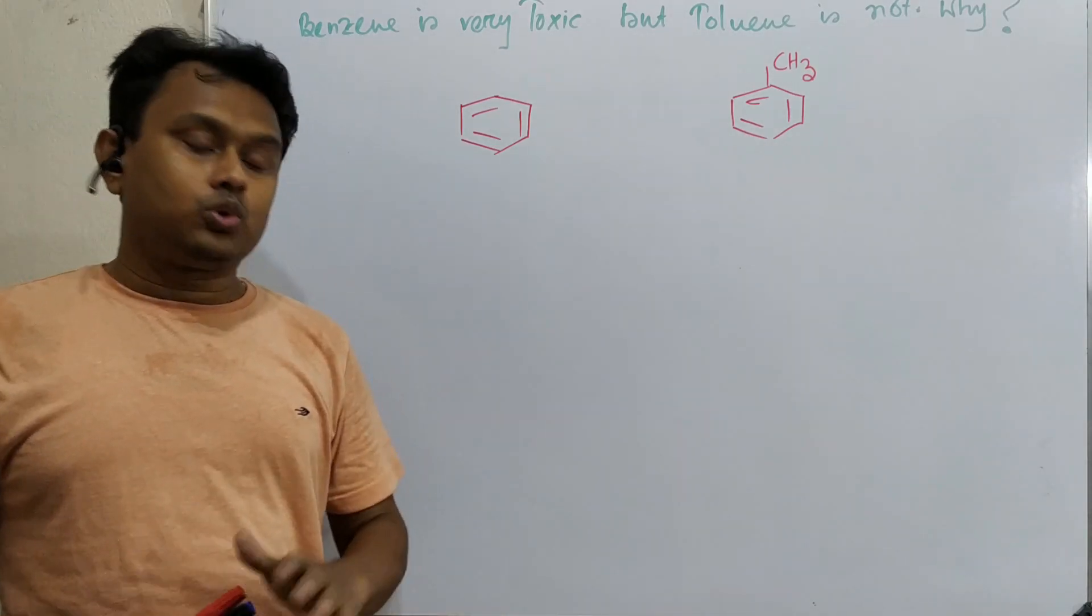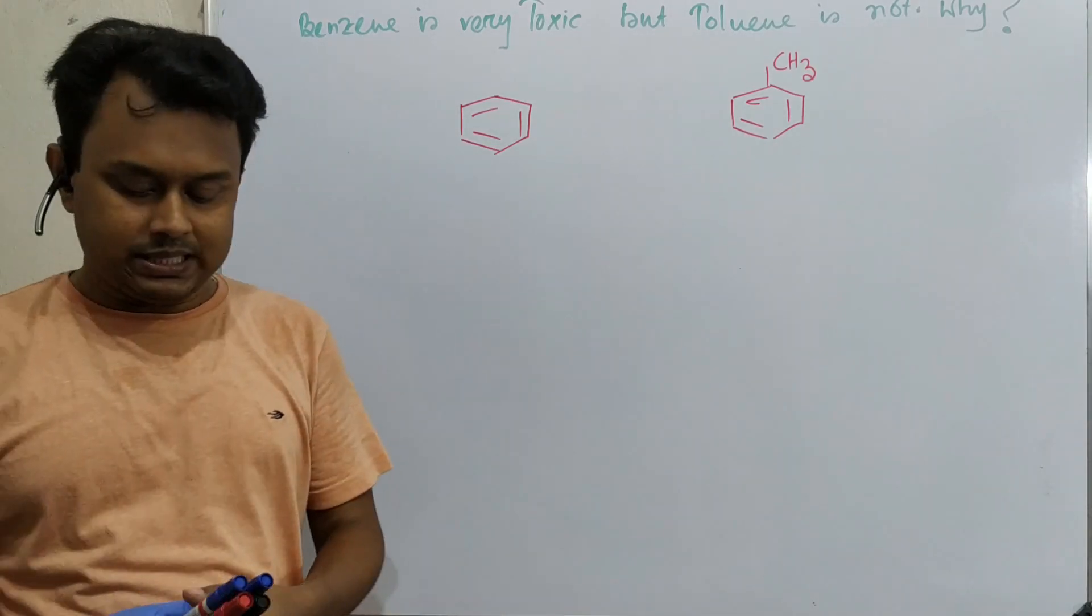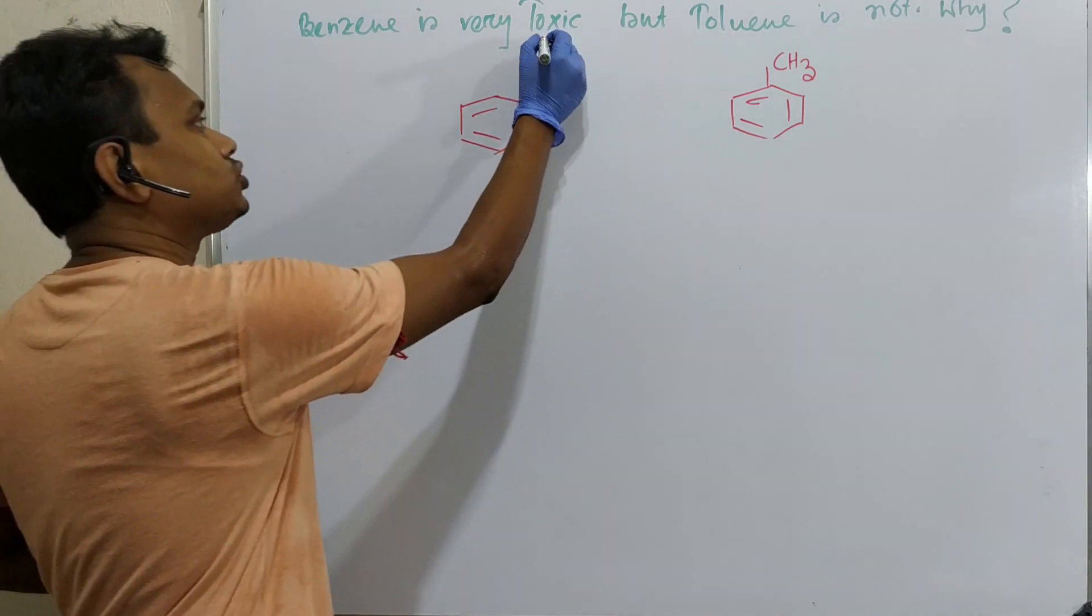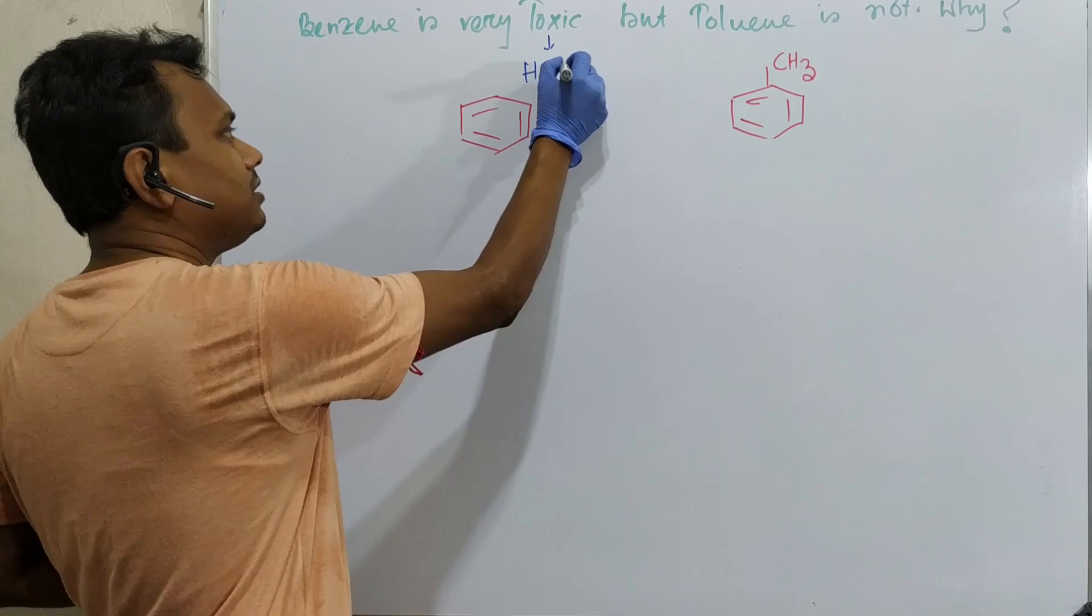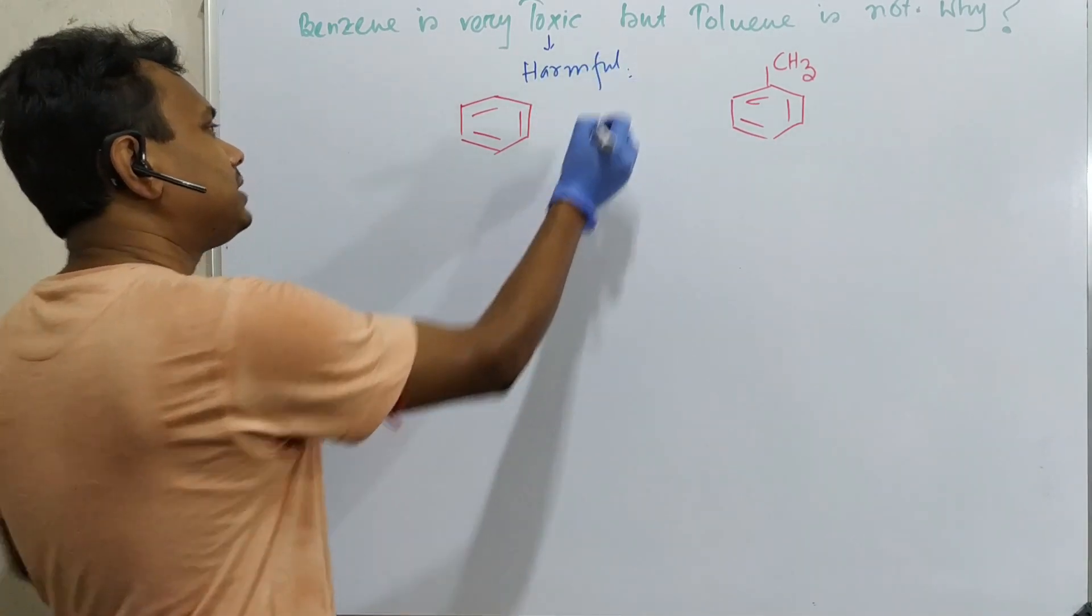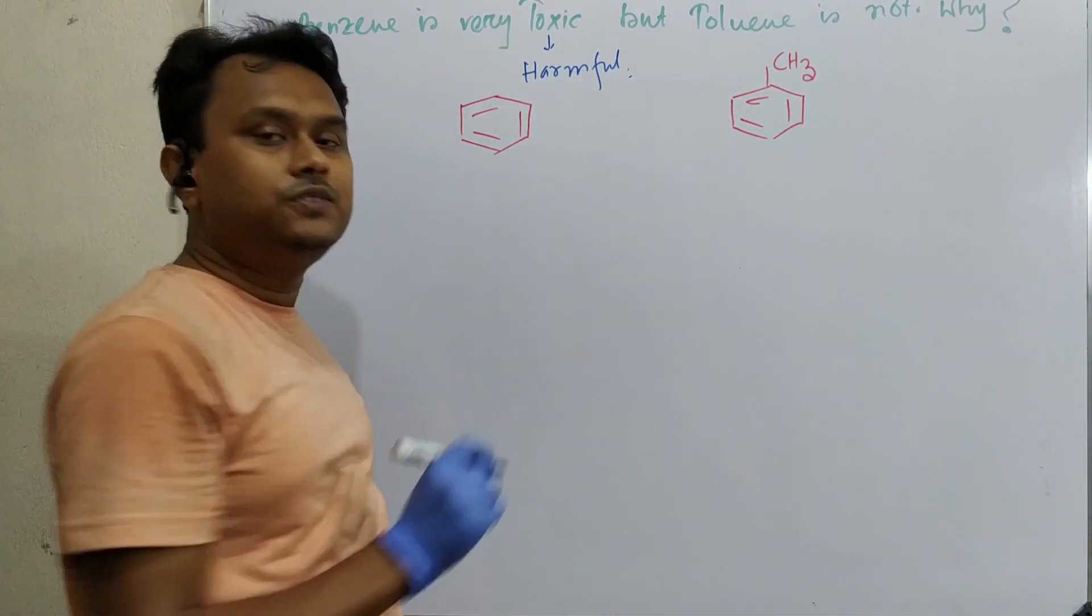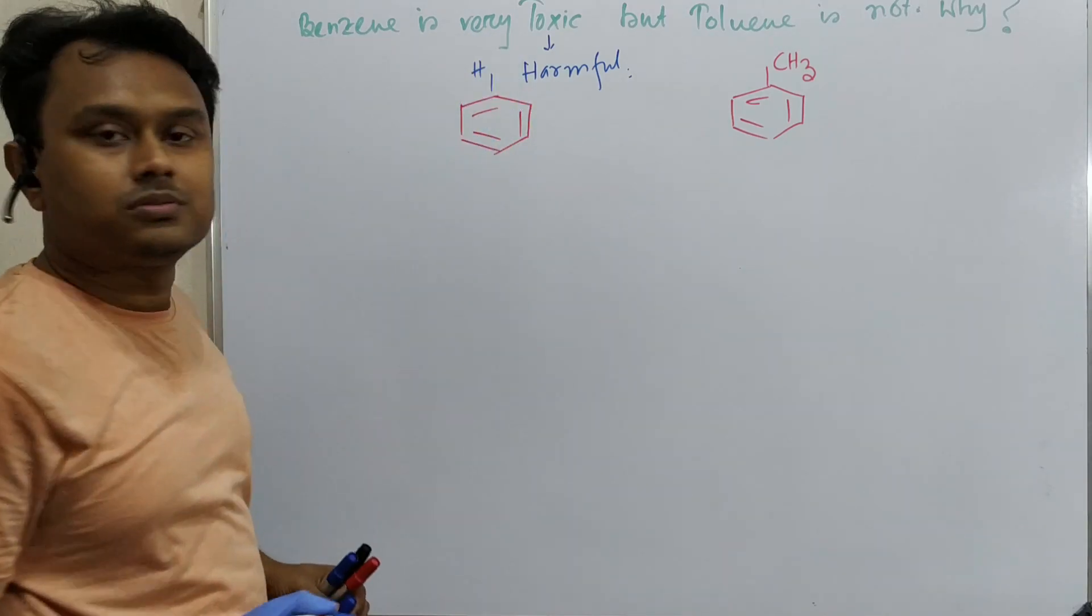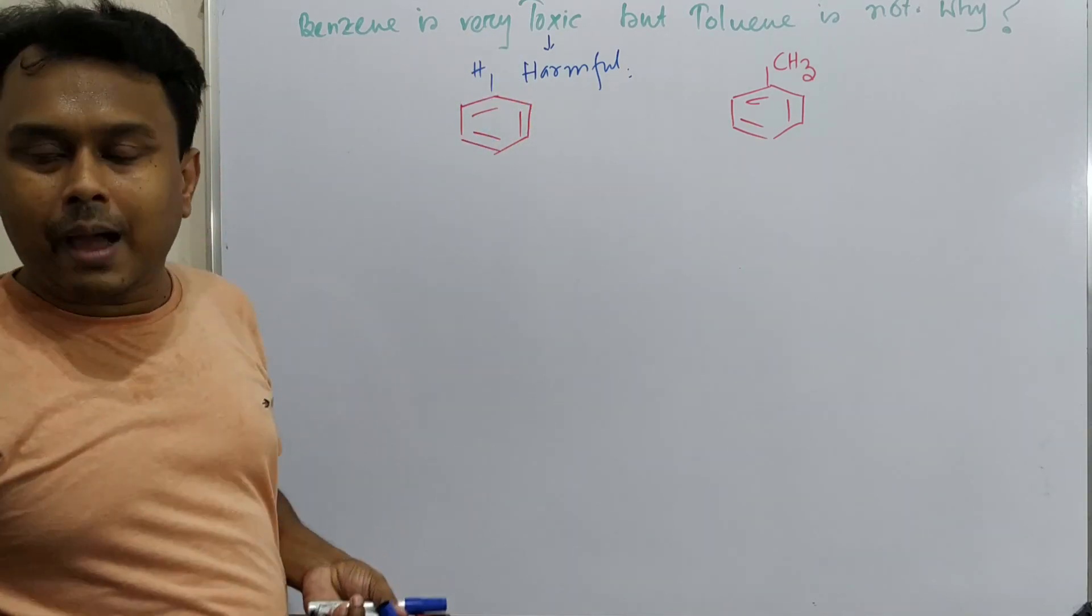So the question is why. What is the problem with benzene? Toxic means it is harmful for our body. And why is toluene not harmful? What is the difference between benzene versus toluene? Just one hydrogen. So what actually happens?